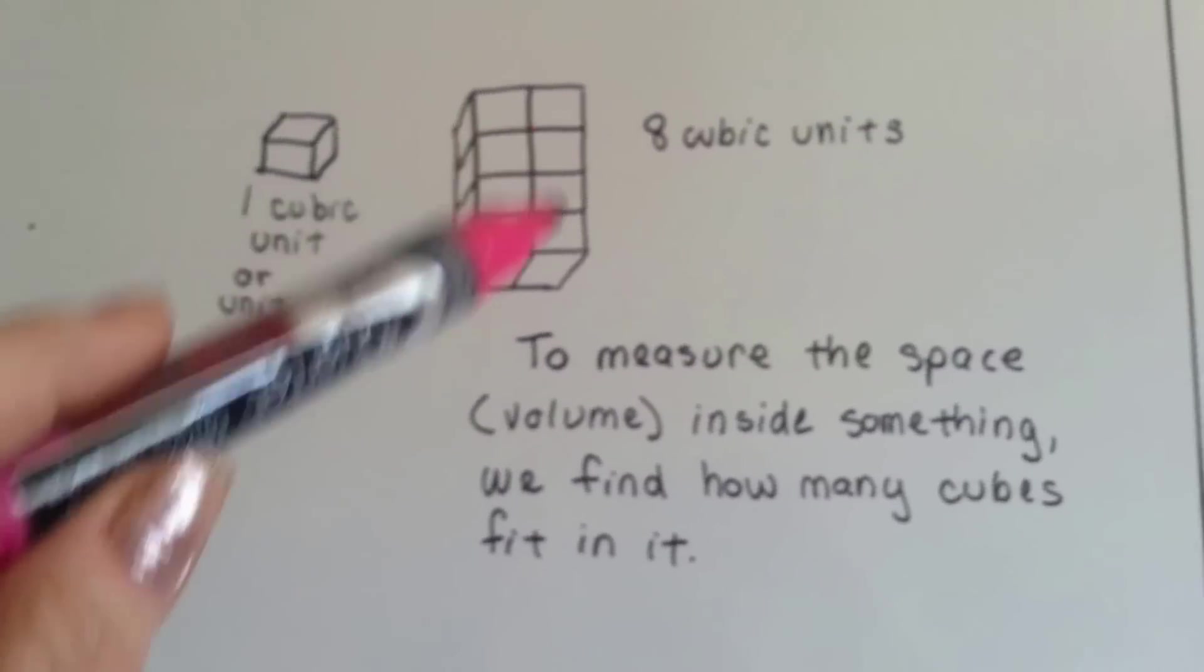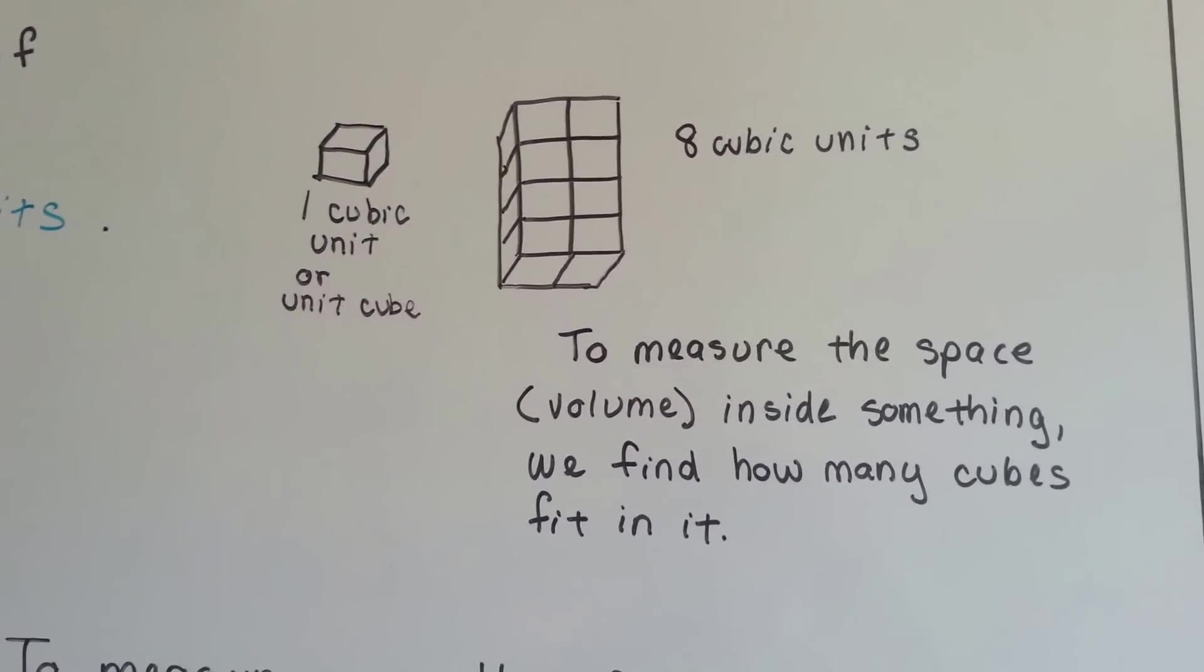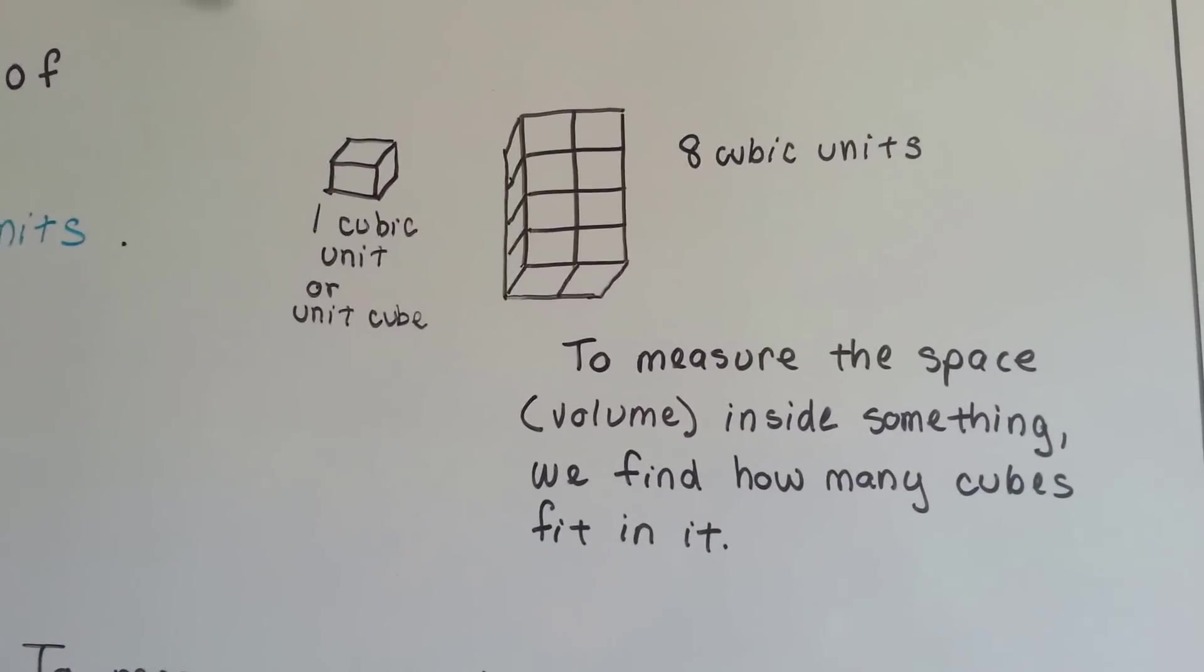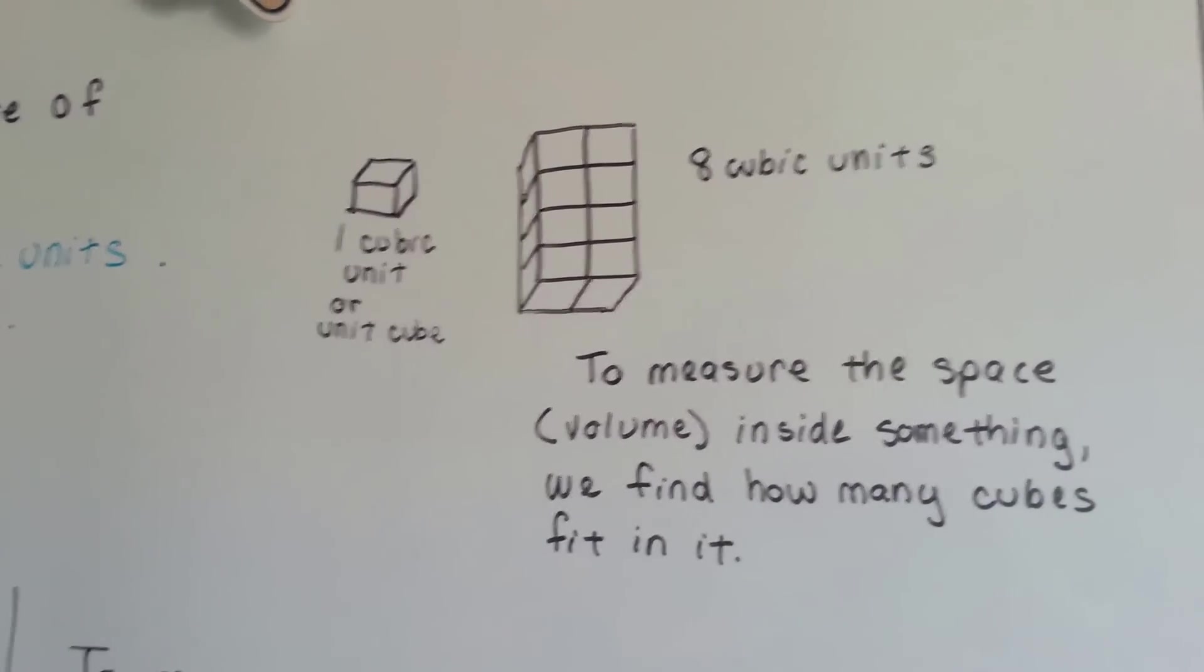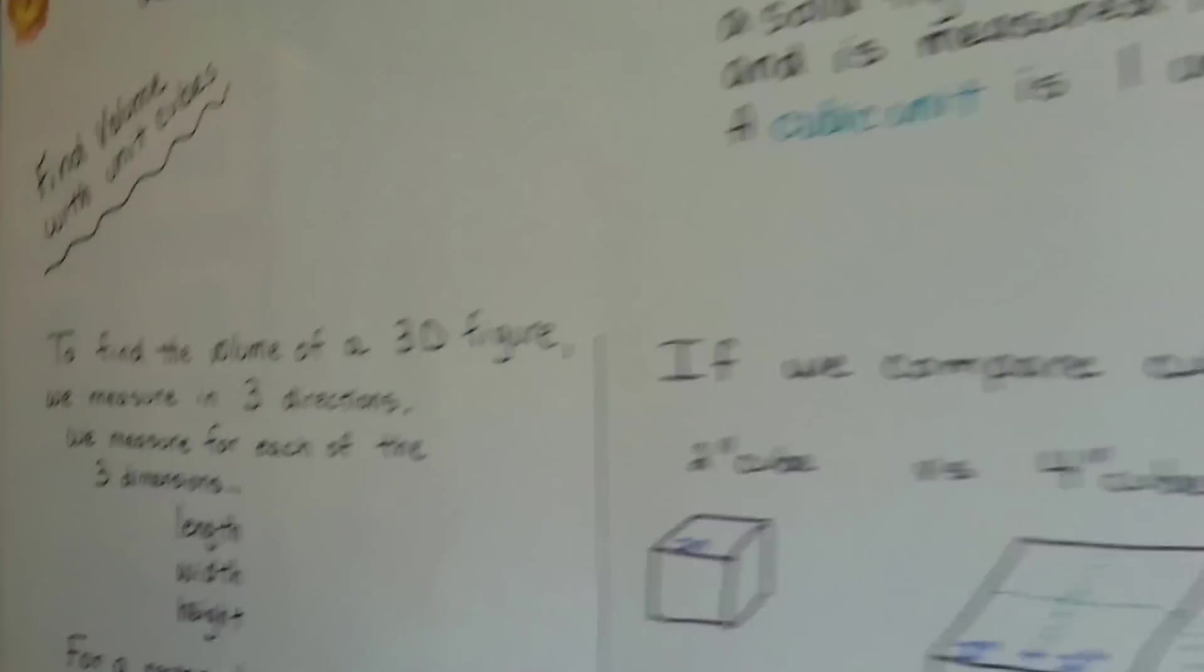If you had eight of them, you'd have eight cubic units. So to measure the space, the volume inside something, we find how many cubes fit in it. And we say that's its volume. It's eight cubic units, it's 24 cubic units, whatever.